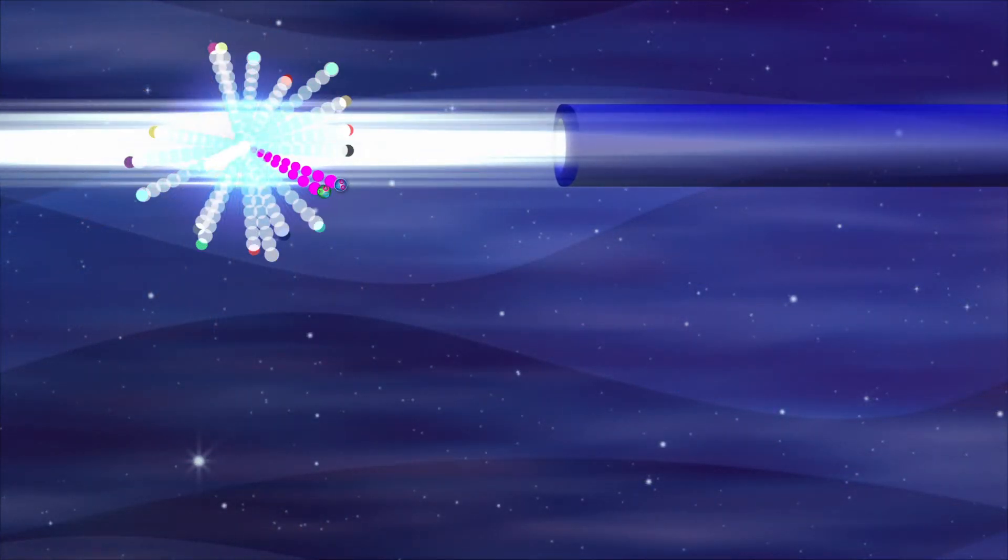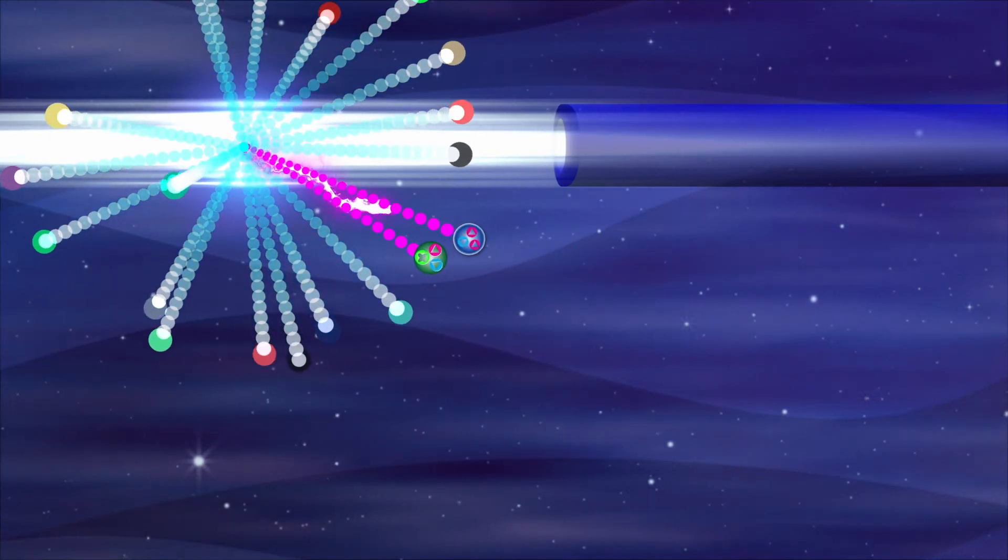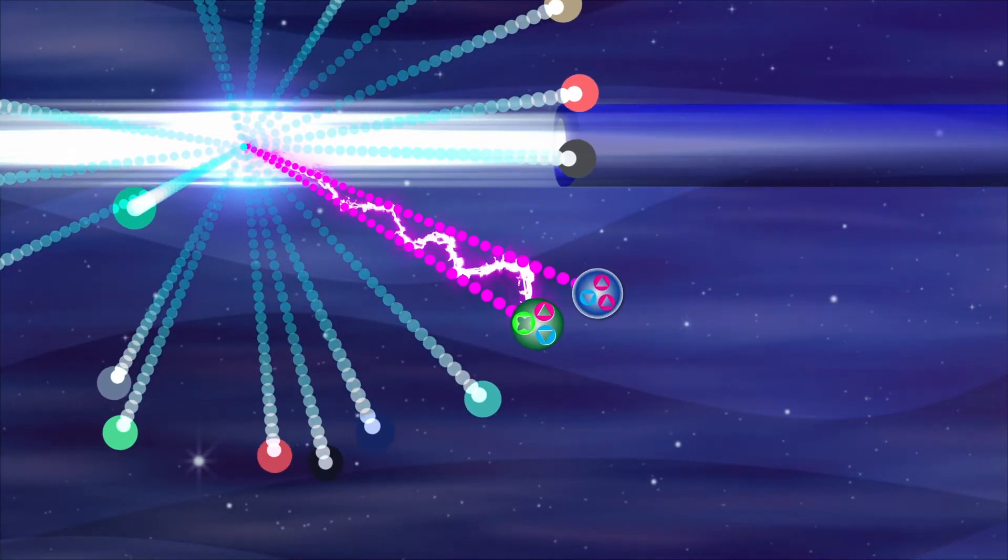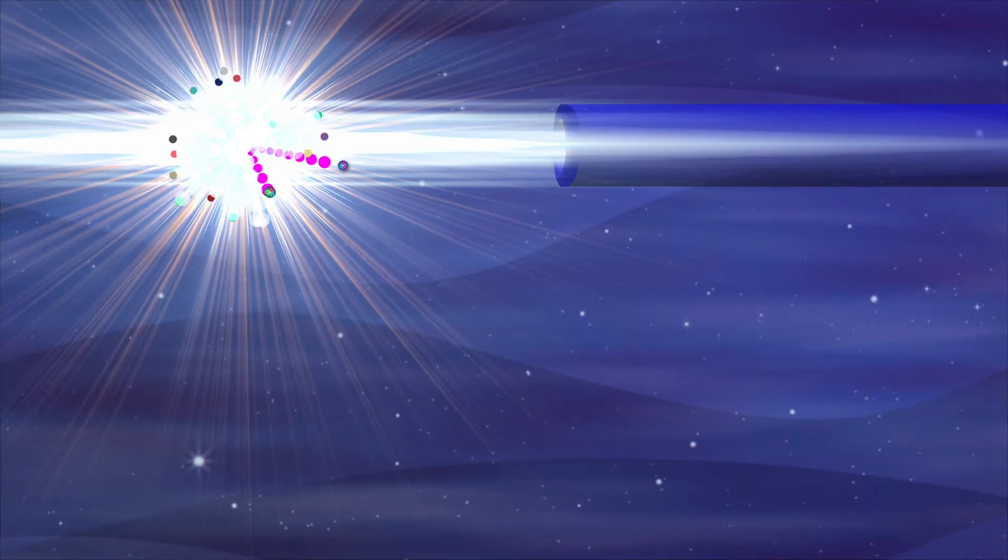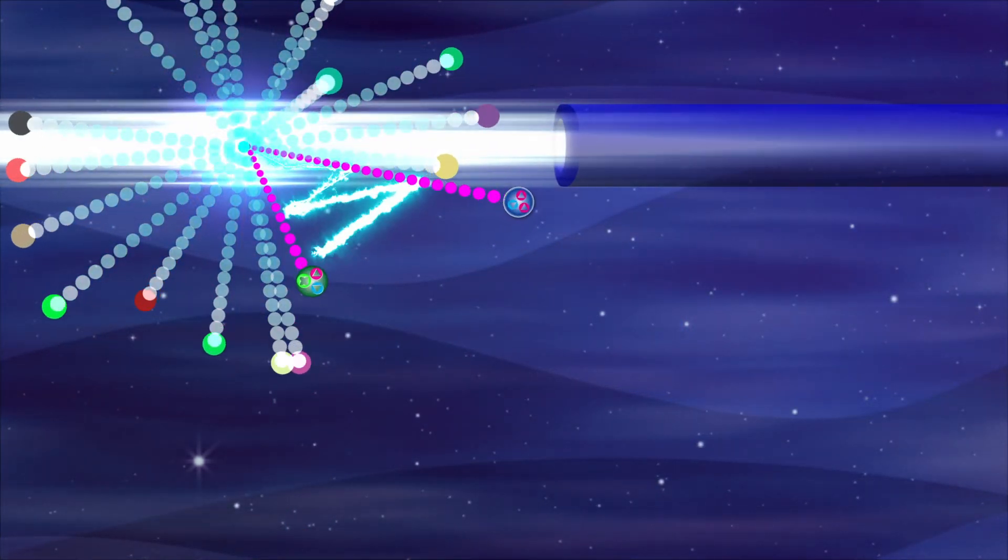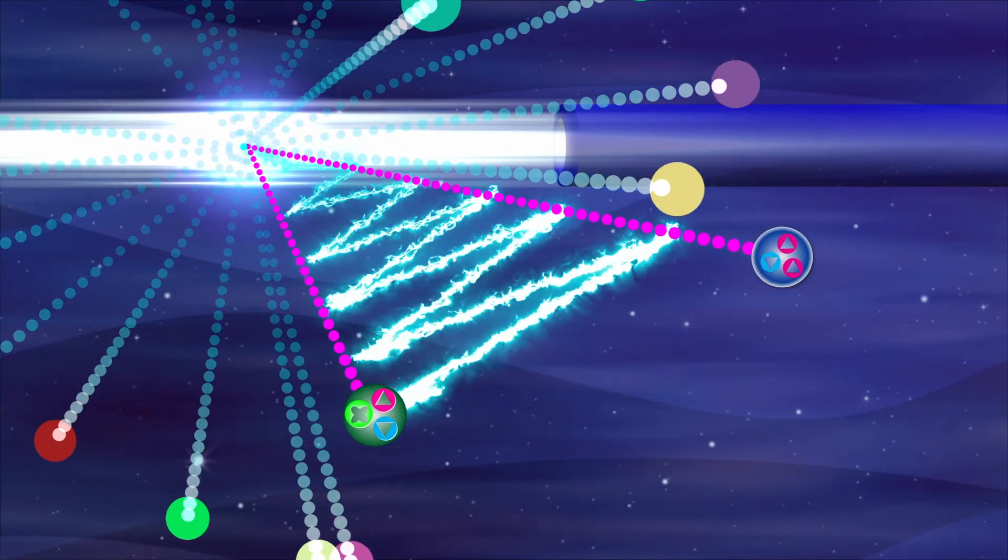By observing a proton-hyperon pair that leaves the collision center in parallel, the interaction can be measured. If their trajectories remain close, the force is attractive. If they diverge, the force is repulsive.